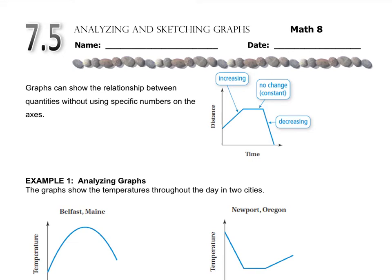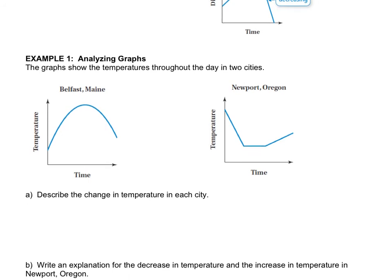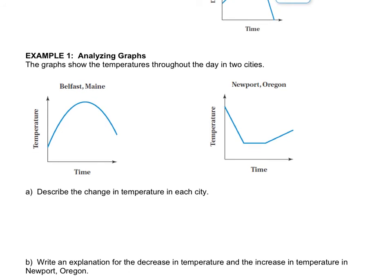This last lesson shows you how you can interpret a graph even if there aren't numbers, recognizing the relationship between how the graph increases and decreases. If you look down in Example 1, we have a picture of two different cities and it tells us about their temperature and what's happening over time. That's why they have a line graph. We talked about that in an earlier lesson.